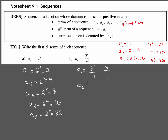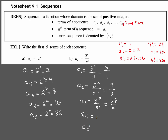Our second term is 3 to the second power over 2 factorial. Since 2 factorial is 2 and 3 squared is 9, we leave it as 9 halves. Our third term is 3 to the third power over 3 factorial: 3 factorial is 6 and 3 cubed is 27, giving 27 over 6. Note — do not reduce this, because this represents a term in a sequence and the actual term is 27 over 6. The fourth term is 81 over 24 and the fifth term is 243 over 120.